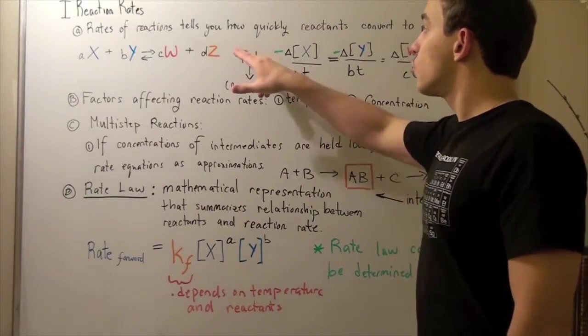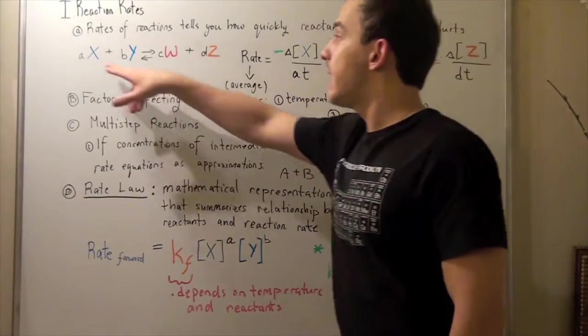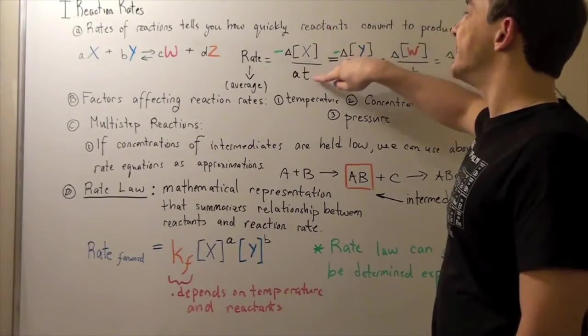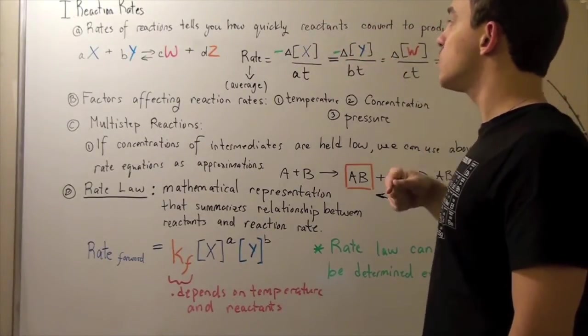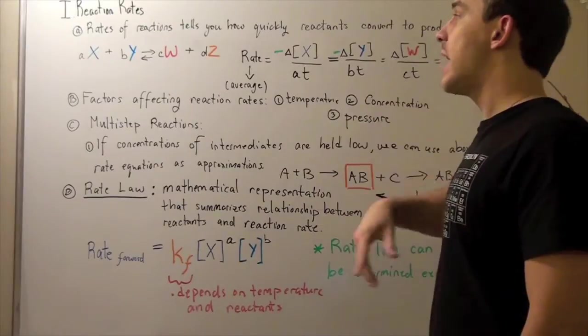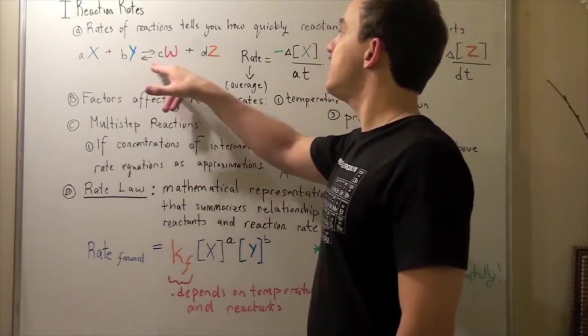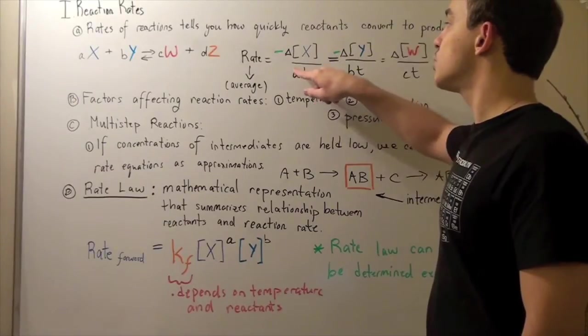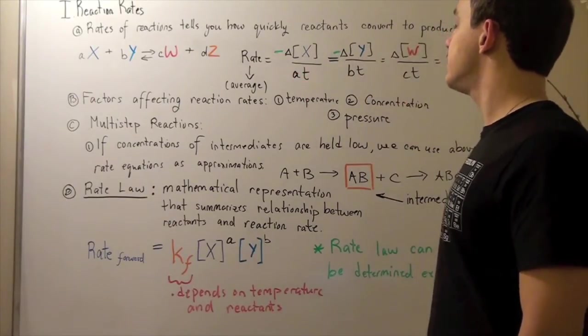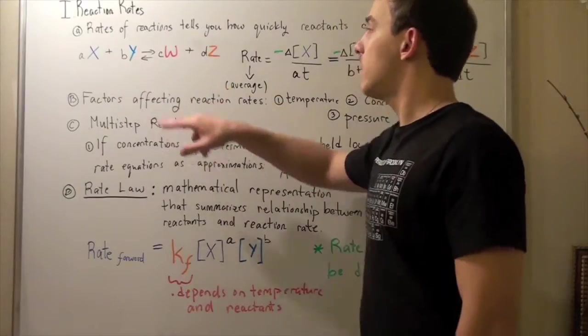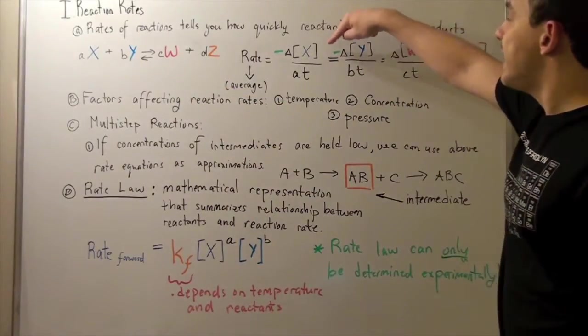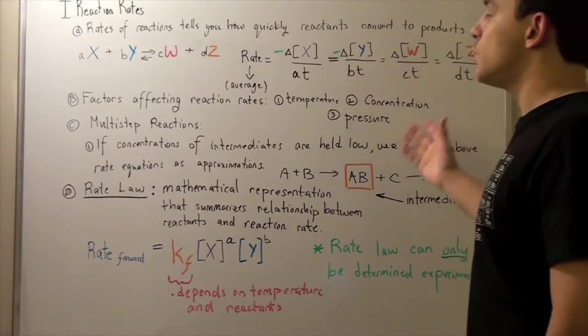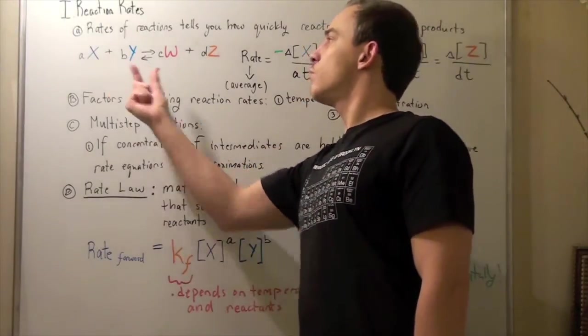So once again, the rate or average rate of X is negative change in concentration of X over time. Time is also multiplied by A. For the case that A, B, C, and D are 1, we simply take away the A because 1 times T is T. The same thing can be said for Y. The negative change in concentration of Y over BT gives you the rate of disappearance of Y.